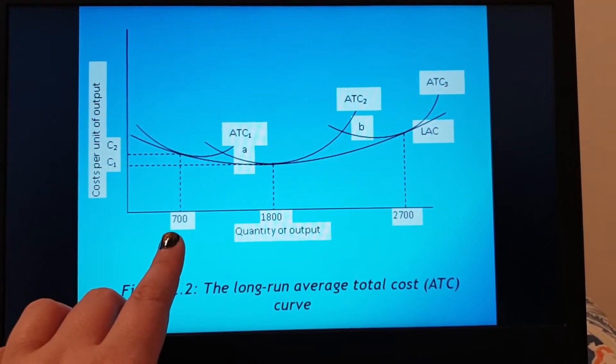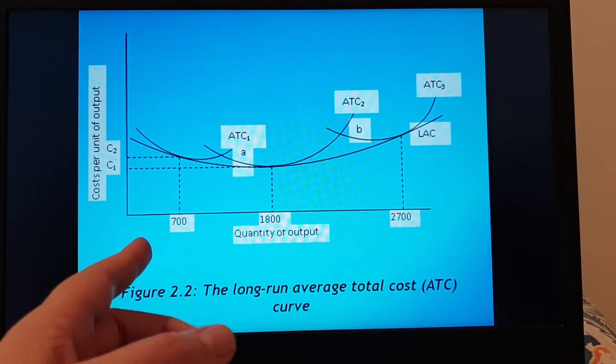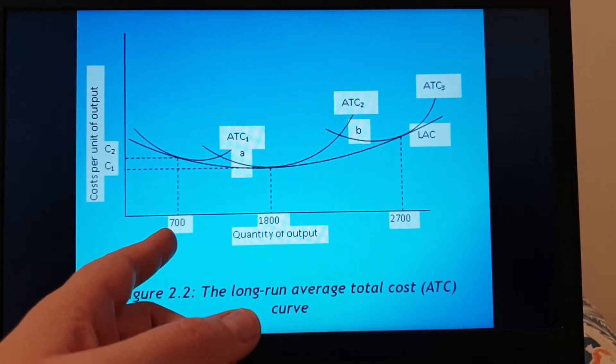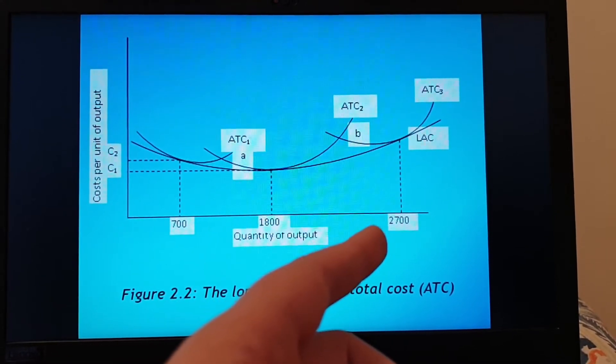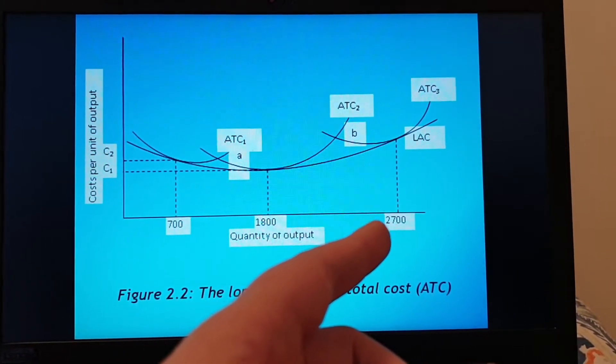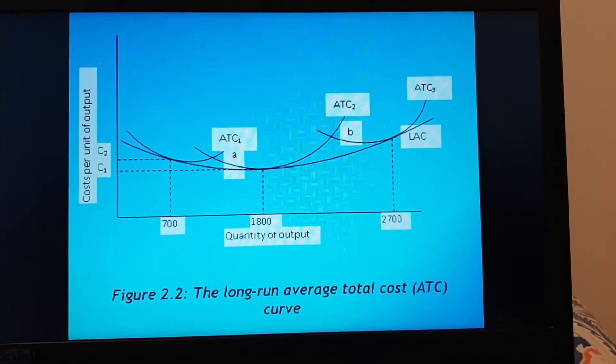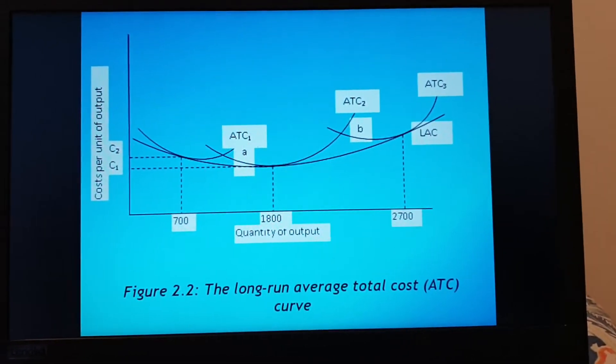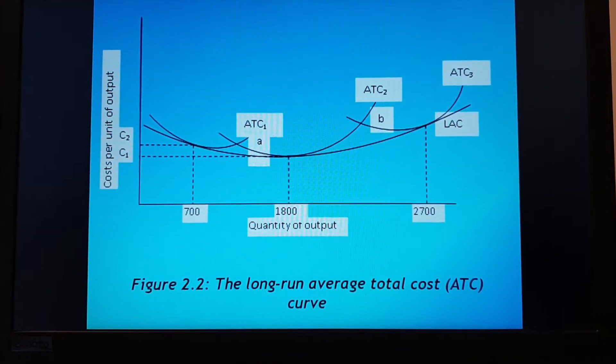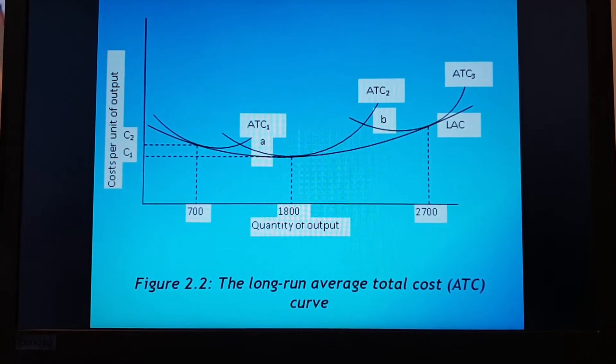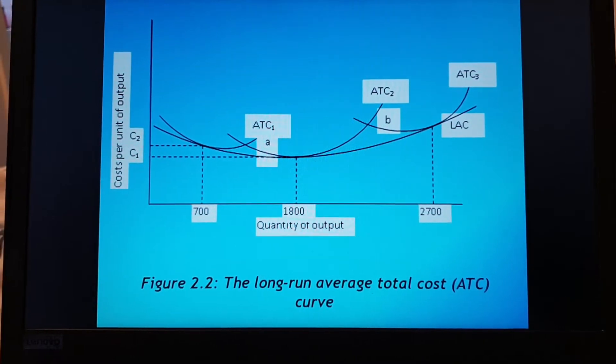And the output is let's say how many milies this farmer can produce. Here you can produce 700, there you can produce 1800 and there you can produce 2700. So he will obviously want to produce the maximum amount of milies but still make the maximum amount of profit that he can make. That is where remember my production rule MC equals MR.